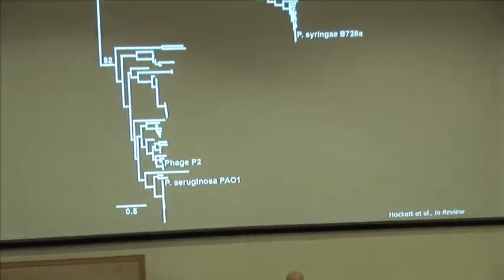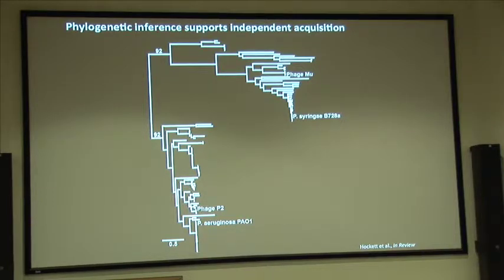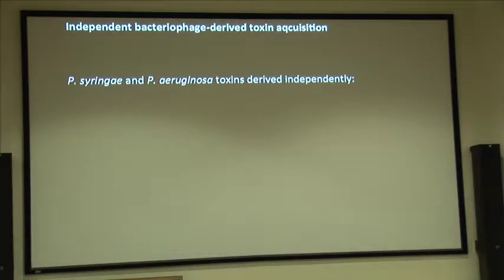They look like they're coming from different sources, which is the question I wanted to follow up on—is this an independently derived event? The evidence suggested this is the case. Comparing them to their putative progenitor phages, the aeruginosa toxin is derived from P2 or a P2-like progenitor, whereas the toxin from Pseudomonas syringae is derived from phage Mu or a Mu-like progenitor. Doing phylogenetic reconstruction, I found three different proteins I could link among all members. In every case the phage P2 homolog clustered with Pseudomonas aeruginosa, whereas the phage Mu homolog clustered in a well-supported clade with B728A—strong evidence that these toxins are essentially derived independently of each other.